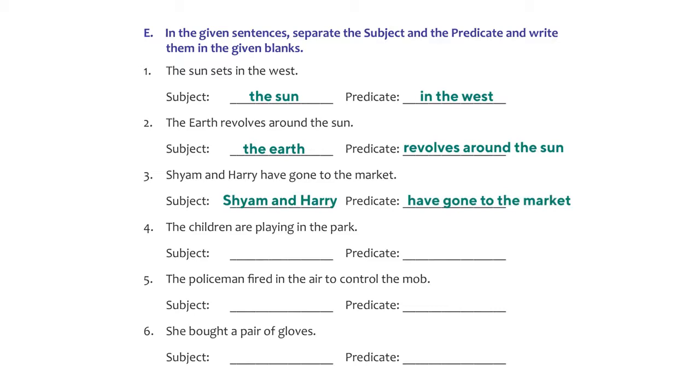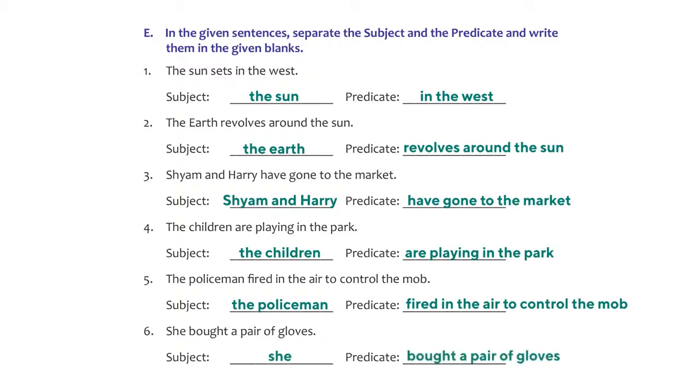Four, the children are playing in the park. Subject, the children. Predicate, are playing in the park. Five, the policeman fired in the air to control the mob. Subject, the policeman. Predicate, fired in the air to control the mob. Six, she bought a pair of gloves. Subject, she. Predicate, bought a pair of gloves.